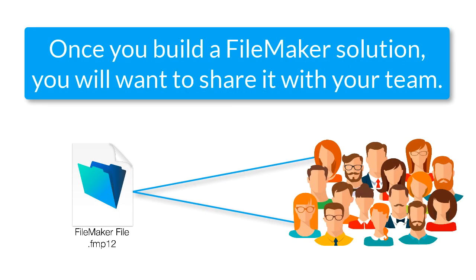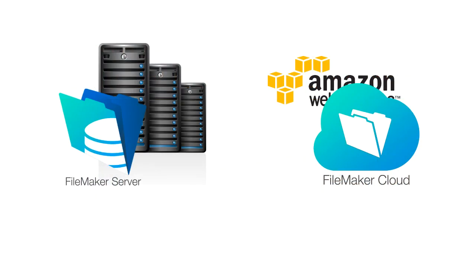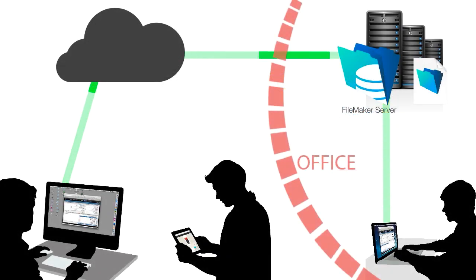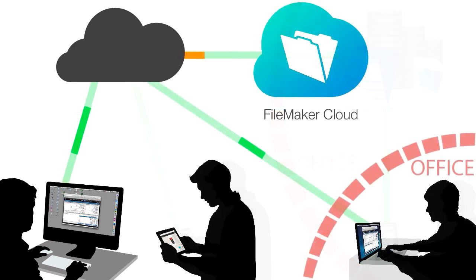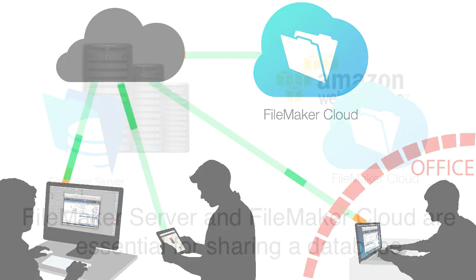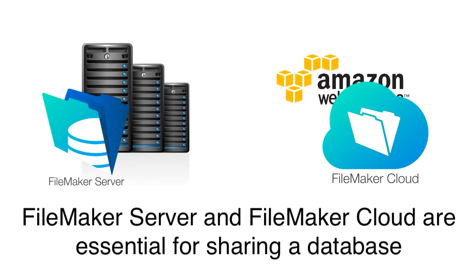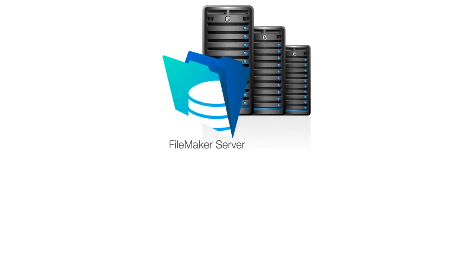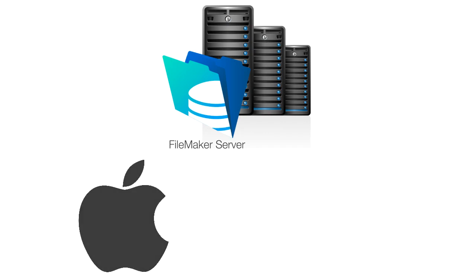Once you build a custom app, you're going to want to host it or share it with your team. To do this, you're going to use one of two products: FileMaker Server or FileMaker Cloud. Both FileMaker Server and Cloud are dedicated software that will host or share your FileMaker database on your local network or out on the Internet. So if you have a mission-critical database, especially one that you're sharing, then using FileMaker Server or FileMaker Cloud is something you really need to consider.